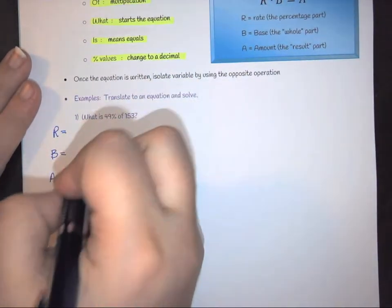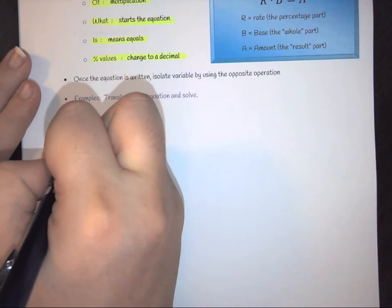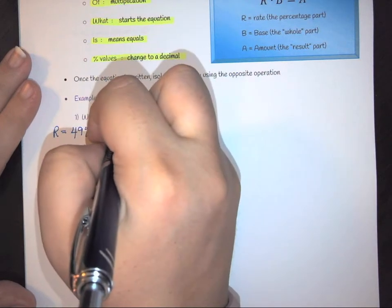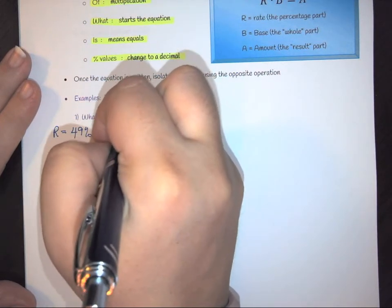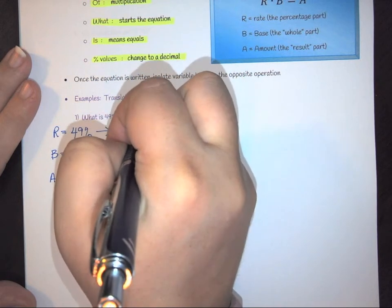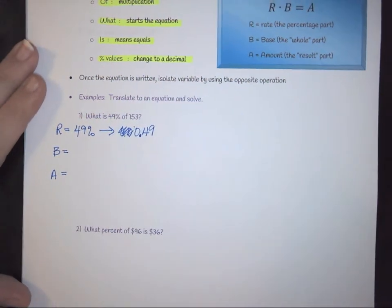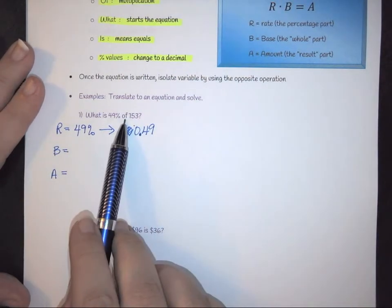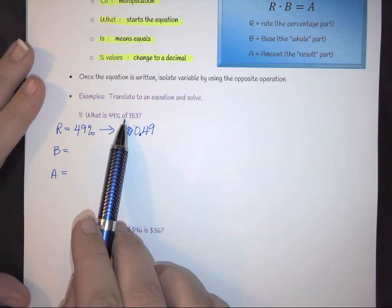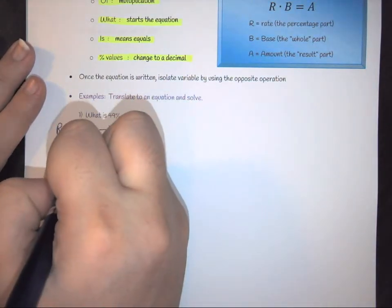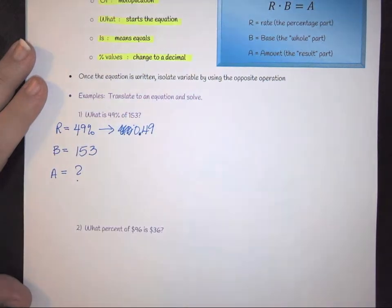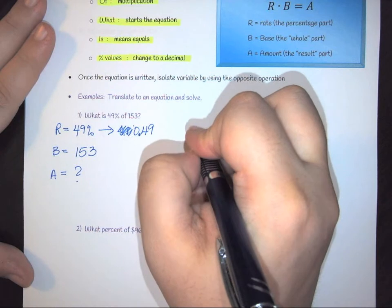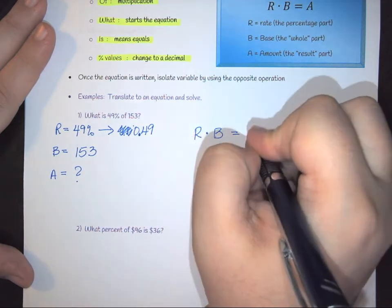So first of all, we have a percentage, that's our rate. So we have 49%. We need to convert that to a decimal. So divide by a hundred is 0.49. Okay, 49%. And then the of part is what signifies again your multiplication. So here we have B is 153, which means A is the unknown. So the way we set this up is we have R times B is equal to my A term.